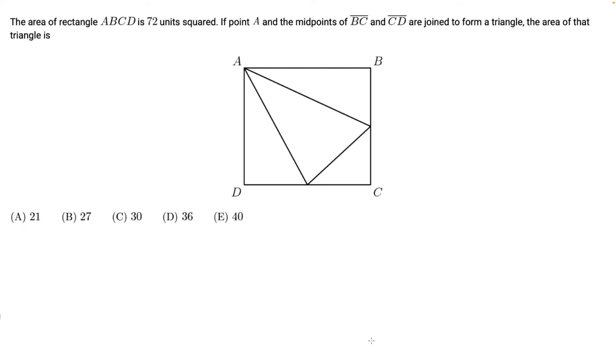The area of rectangle ABCD is 72 units squared. If point A and the midpoints of line BC and line CD are joined to form a triangle, the area of that triangle is what we're trying to find.